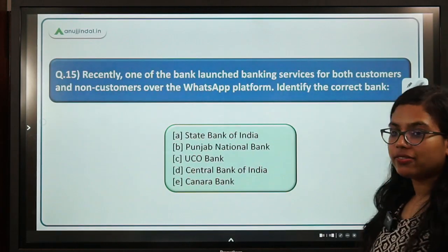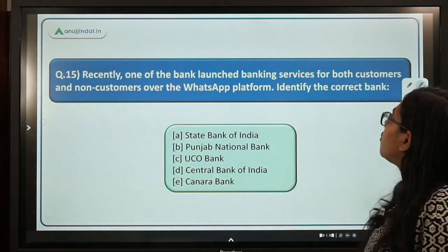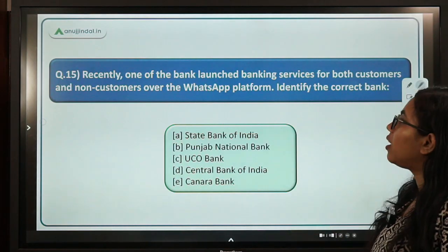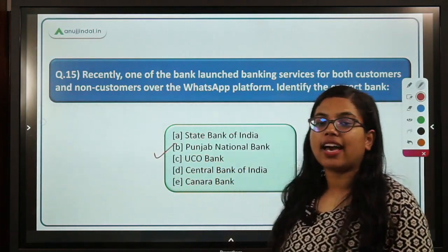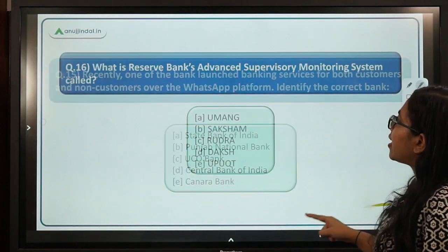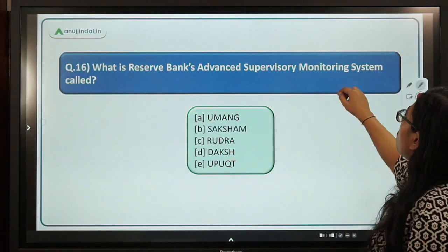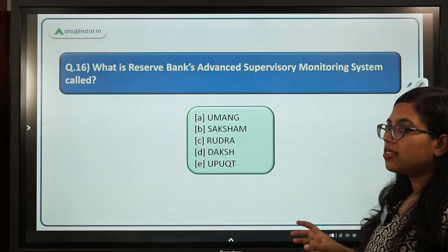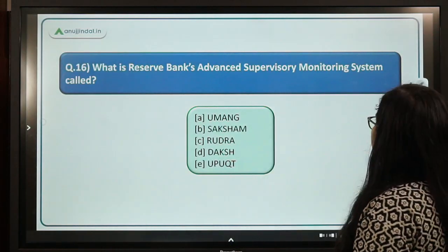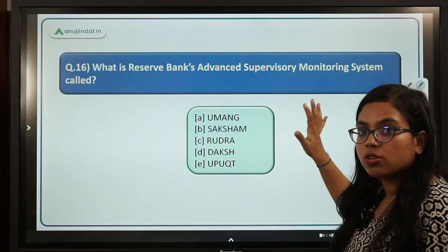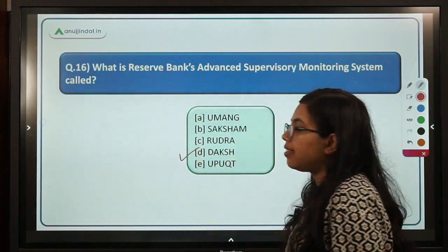Question 15 asks: recently, which bank launched banking services for both customers and non-customers over the WhatsApp platform? It is none other than Punjab National Bank, which we discussed in the RBI 247 session. Question 16 asks: what is RBI's Advanced Supervisory Monitoring System called? This system was introduced to strengthen supervision in RBI. The name is DAKSH. D is the correct answer.